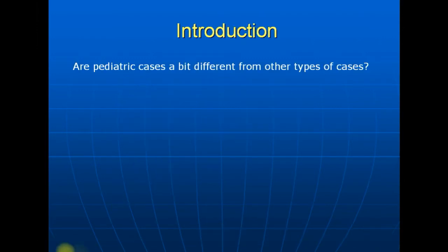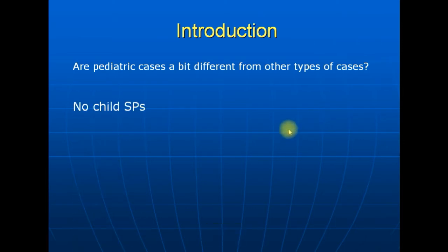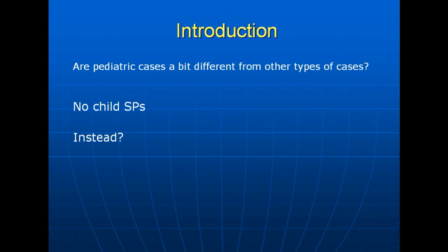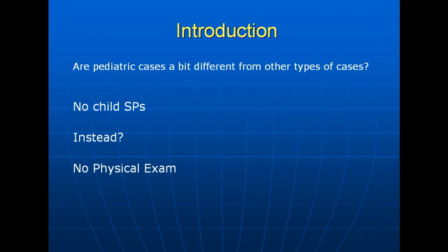Are pediatric cases a bit different from other types of cases? Yes, there is no child SP — no standardized patient — and instead there is a legal guardian or a caretaker, usually one of the parents. Subsequently, there is no physical examination because there is no real patient, and accordingly there is different time management.